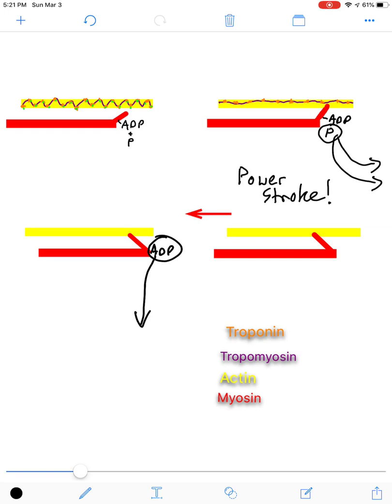So here, you can think of it as myosin binding to actin for the first time. As soon as it does that, the phosphate flings off, which triggers the power stroke. And once the power stroke concludes, the ADP leaves.